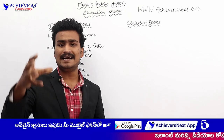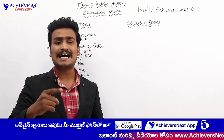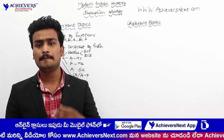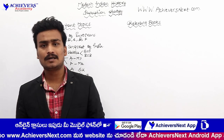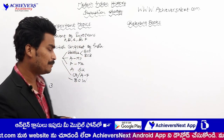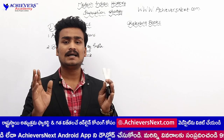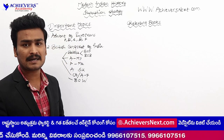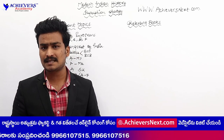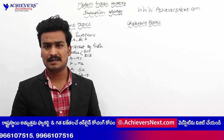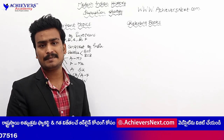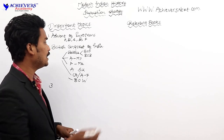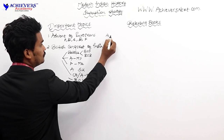The British introduced reforms in education, revenue, judiciary, police, civil services, and press sectors. This chapter covering police reforms, civil services, press reforms, and education reforms is an important chapter we must study carefully.